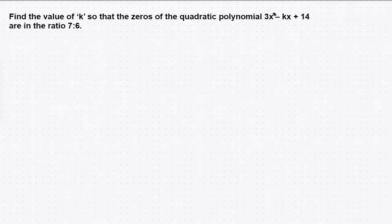Let's start with the next one. It says find the value of k so that the zeros of the quadratic polynomial 3x² - kx + 14 are in the ratio 7:6. So two zeros have made it.